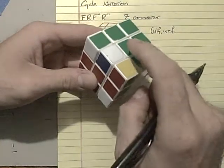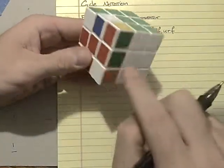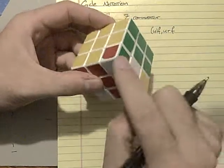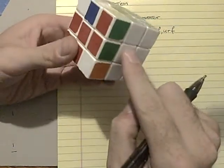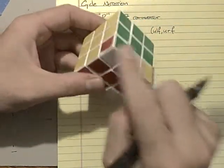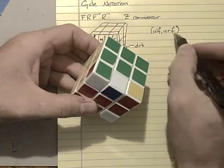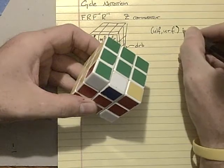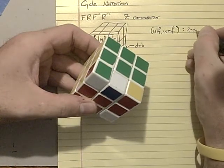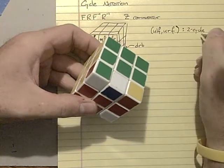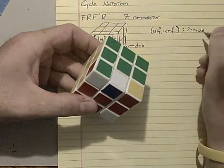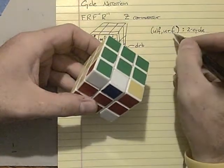Now, sorry about that. Up right front, that was green, red, white. I apologize. That's just where we came from. So these two switched. So this notation with the parentheses tells us that this is a two cycle. The two is because there are two pieces. It's a cycle because if we do this move again, these two pieces swap again.